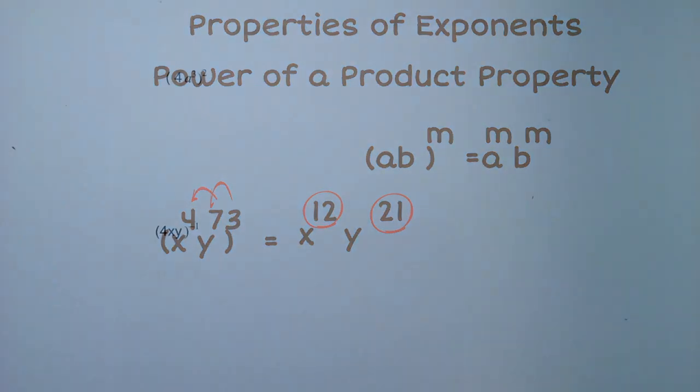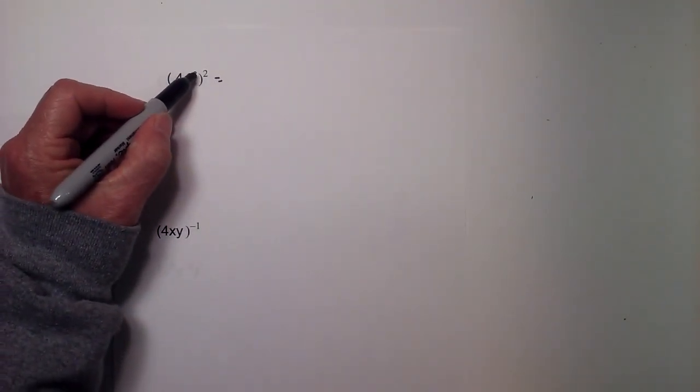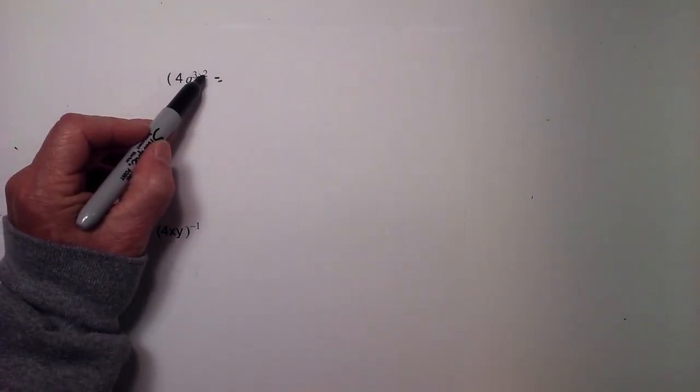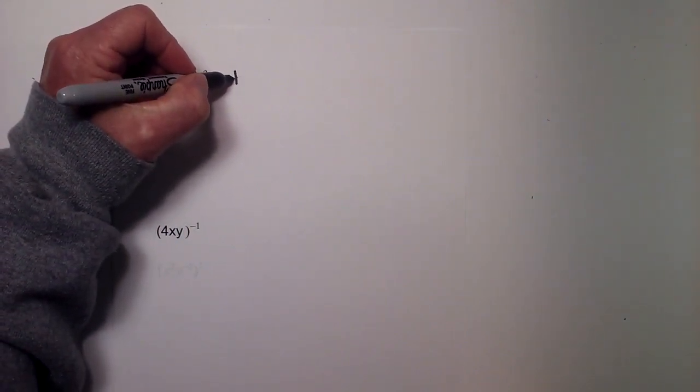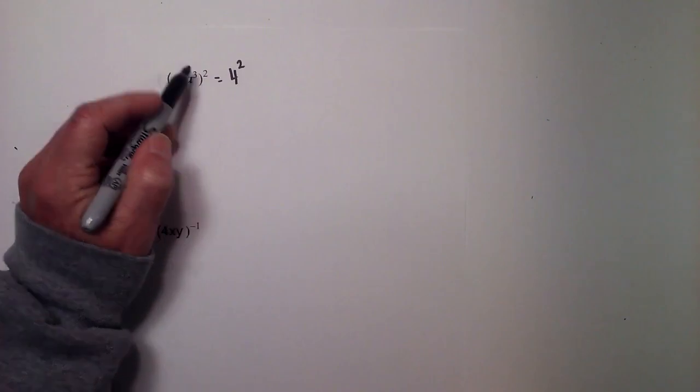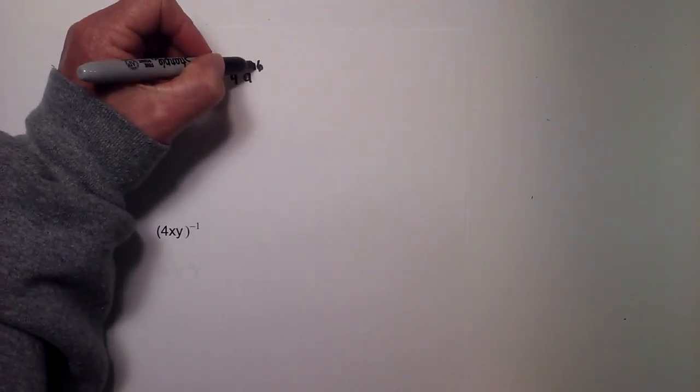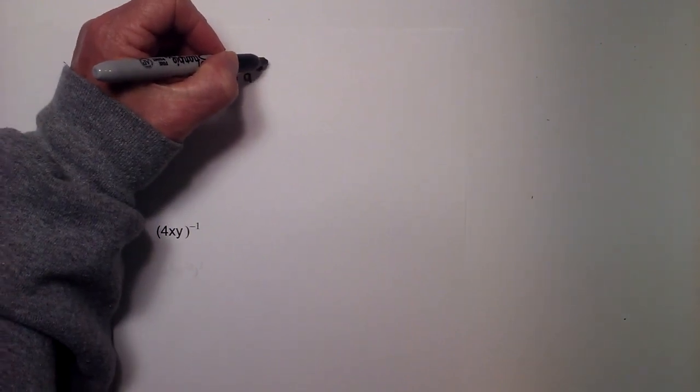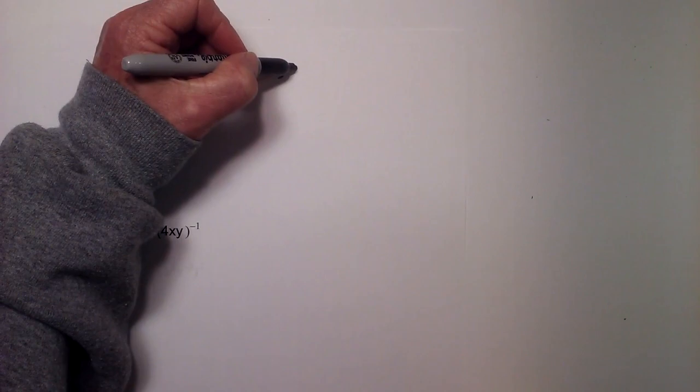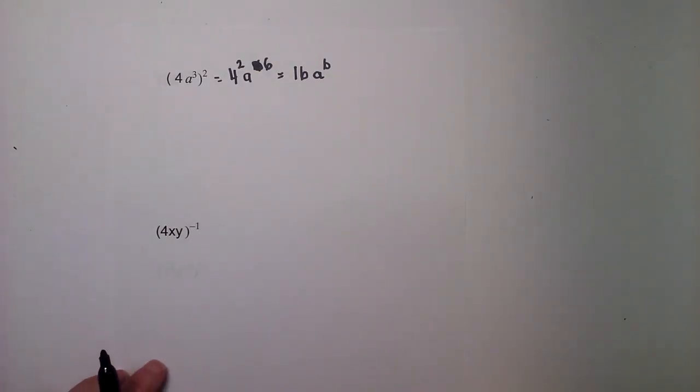Let's look at a couple more examples. We have 4A cubed raised to the 2nd power, so 2 times 4 to the 1st will be 4 squared, 2 times 3 is A to the 6th. And then this can be written 4 squared is 16A to the 6th.